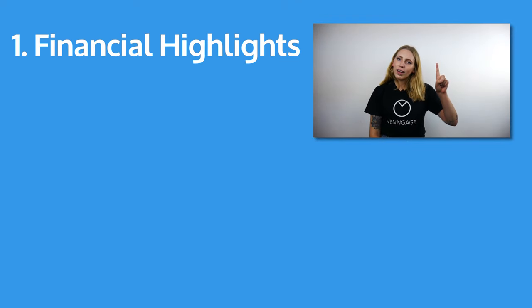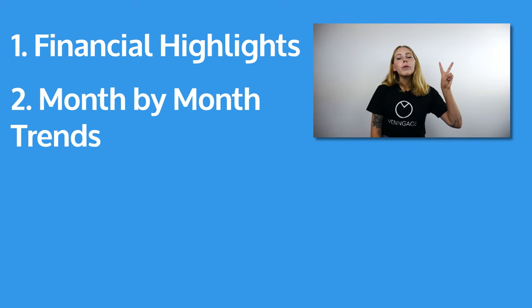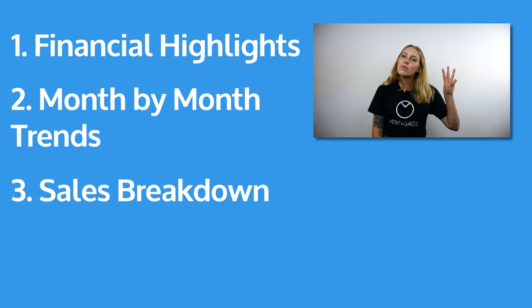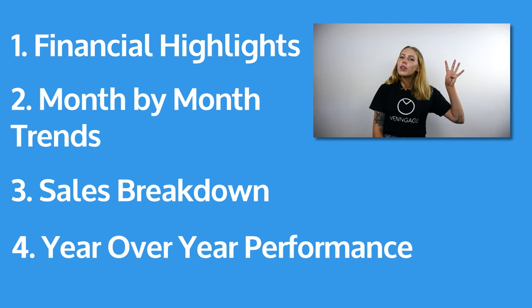Tip three: use a variety of different charts to showcase your data. There are a few types of metrics found in most annual reports: financial highlights, month-by-month trends, sales breakdown by market, project and product, and your year-over-year performance. The type of data you're visualising should determine which sort of chart you use. Let's review the best chart type for each metric.